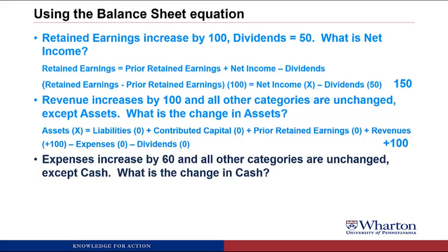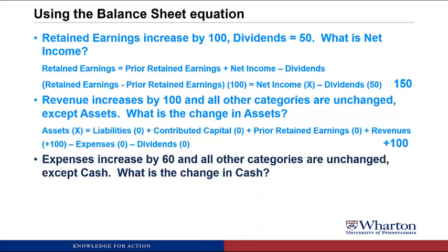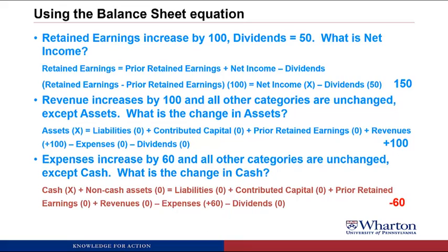Finally: expenses increase by 60 and all other categories are unchanged except cash — what is the change in cash? Using the complete balance sheet equation with assets split into cash and non-cash: expenses went up by 60, so the right-hand side goes down by 60, which means cash also has to go down by 60 for us to stay in balance.